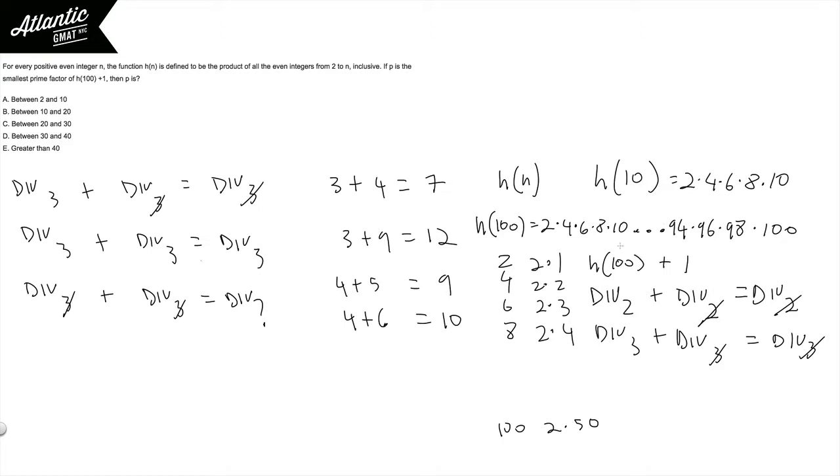None of these are going to be factors of h of 100 plus 1. Meaning that if h of 100 plus 1 doesn't have any factors from 1 to 50, it can't possibly have a prime factor between 1 and 50. So its smallest prime factor must be greater than 50.